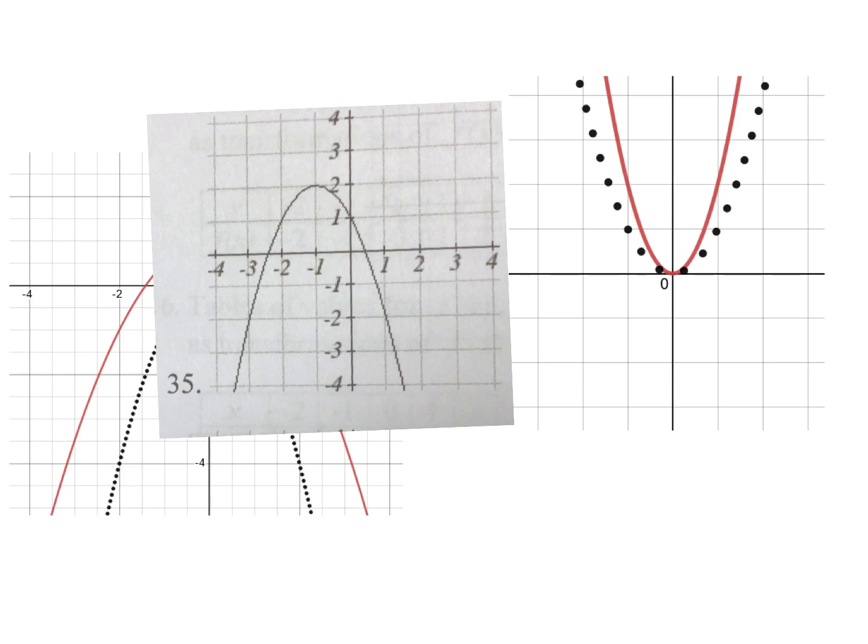So one way to find that leading coefficient in any polynomial function, or actually any function for that matter, is think about the parent function. So here I've got, and this dotted line is x squared, and it's centered at the origin.